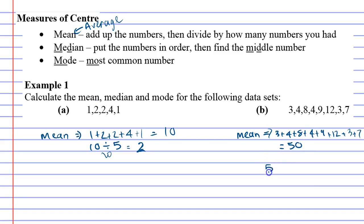And then you take your 50 and divide it by how many numbers I have. 1, 2, 3, 4, 5, 6, 7, 8. 50 divided by 8 is 6.25. And that's quite fine to get a decimal. Mean will quite commonly give you a decimal solution.